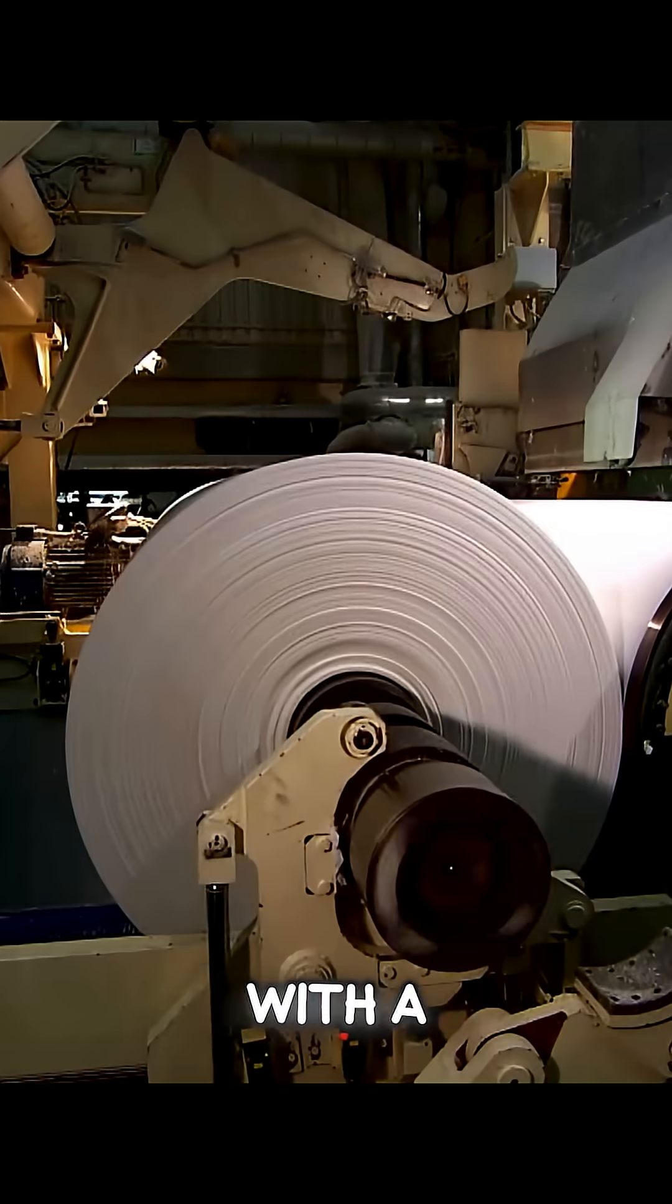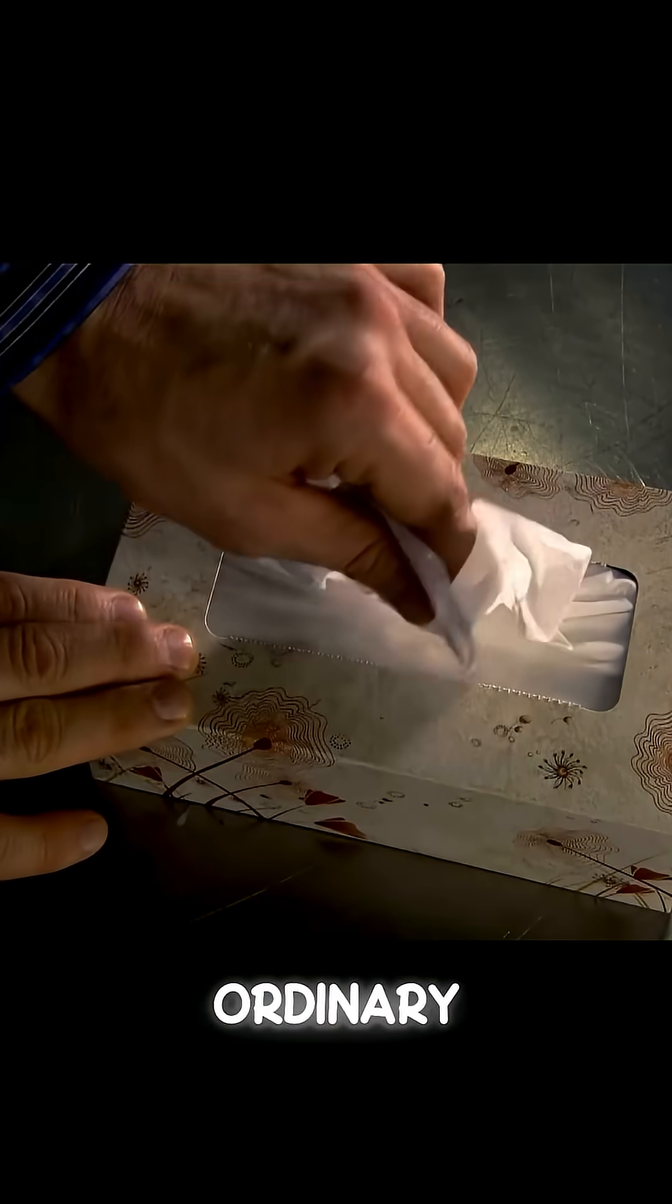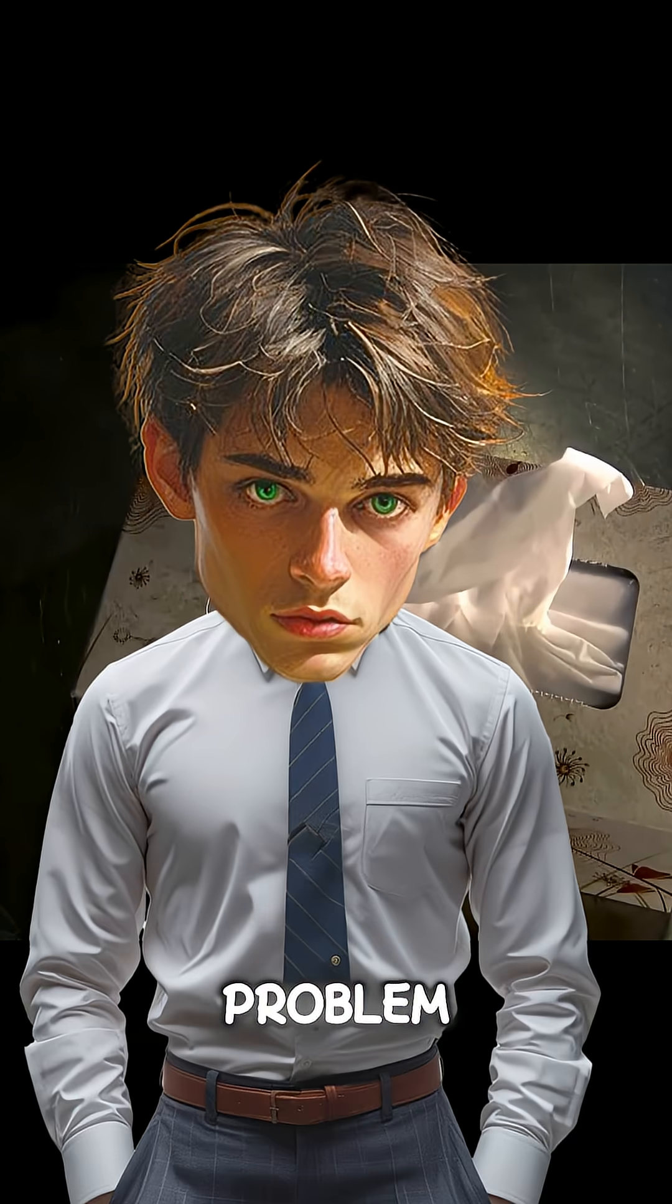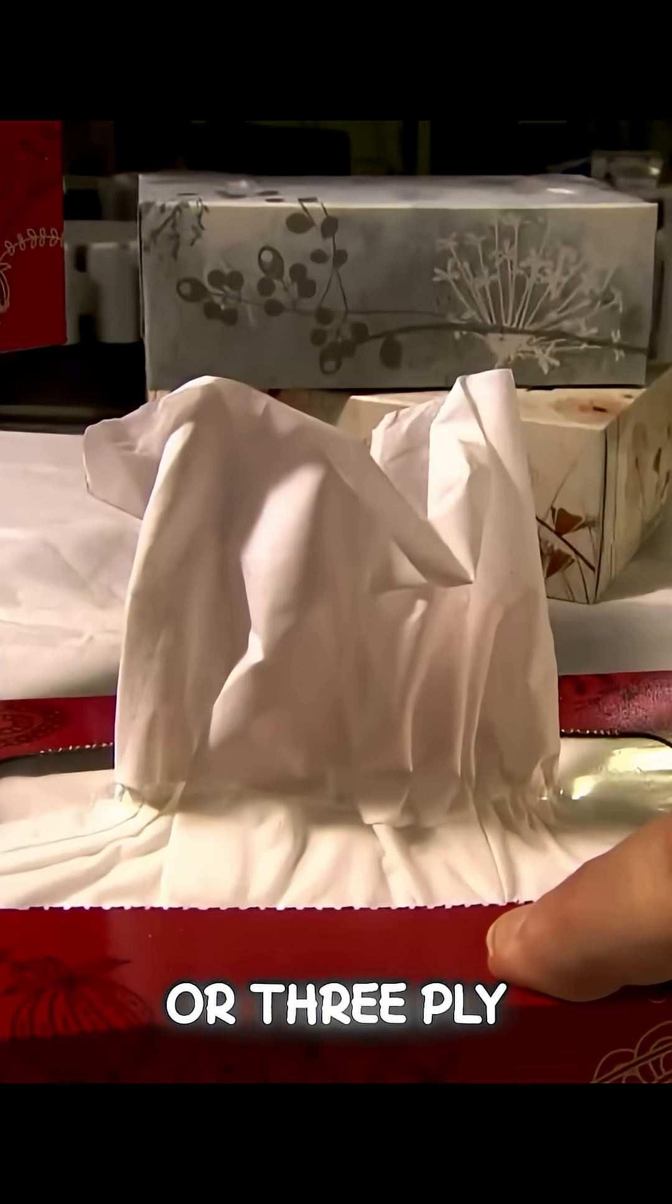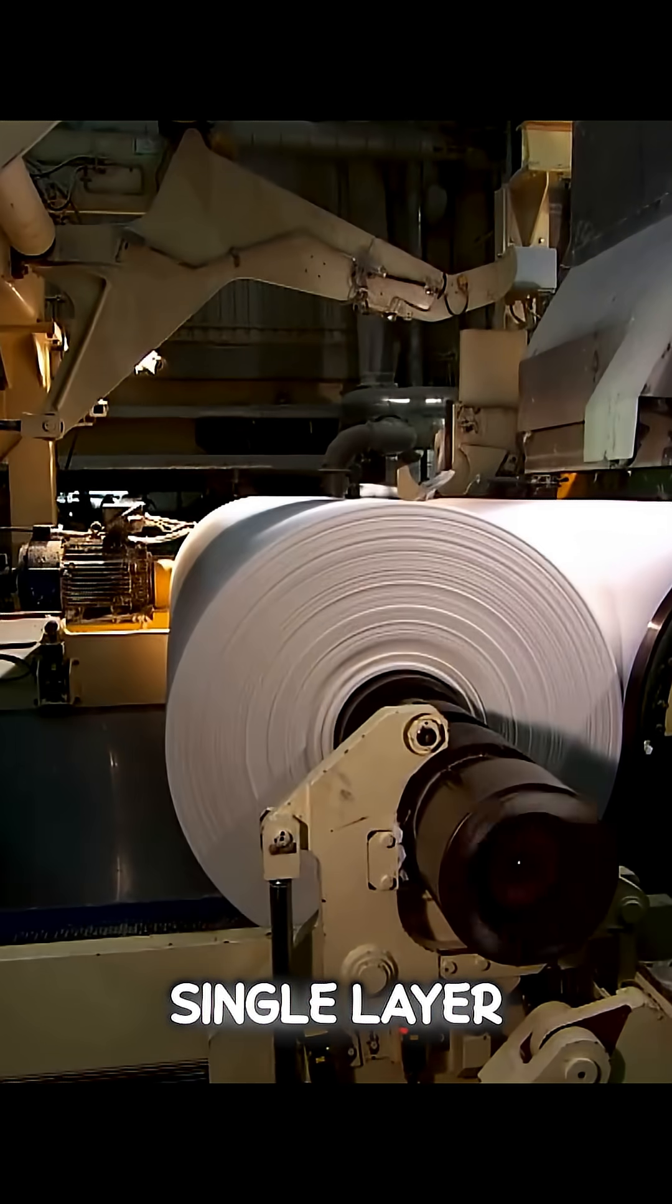Once the moisture is gone, we end up with a giant roll of paper, the base for ordinary tissues. But wait, there's a problem. We usually use two or three ply tissues, and this is just a single layer.